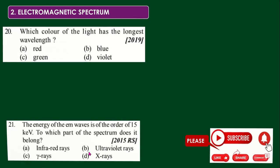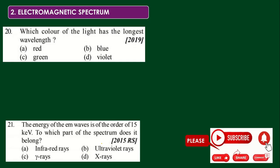We can move with question number 20. Which color of the light has the longest wavelength? Options are red, blue, green, violet. We can choose the first option, red, as the answer.